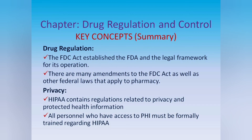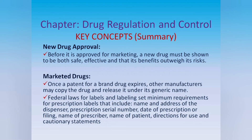Privacy: HIPAA contains regulations related to privacy and protected health information. All personnel who have access to PHI must be formally trained regarding HIPAA. New Drug Approval: before it is approved for marketing, a new drug must be shown to be both safe, effective, and that its benefits outweigh its risks. Marketed Drugs: once a patent for a brand drug expires, other manufacturers may copy the drug and release it under its generic name.